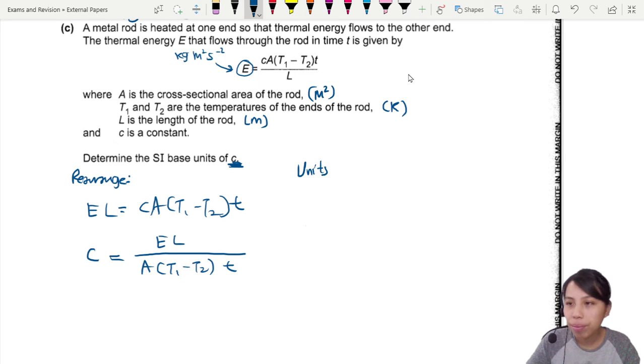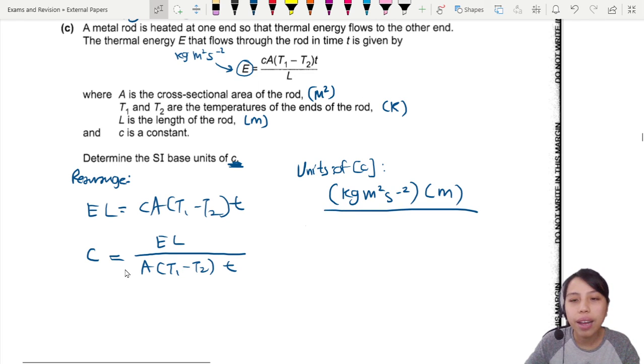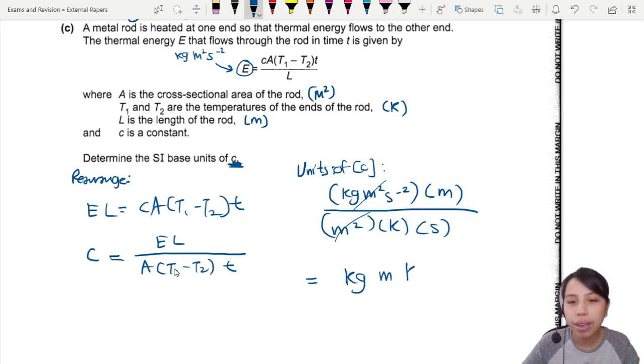I think I'll do it on the right side here. So, units of C. We have energy on top. So I write kg m squared s negative 2. Length is a meter. Area is m squared. What about this? T minus T. Need to put 1k, 2k. No. When you minus two values, you don't just multiply their units together. So it's still K. K. And the last one, time. Seconds. So with all this, I think m and m cancel out. So we have kg m K negative 1 s negative 3.